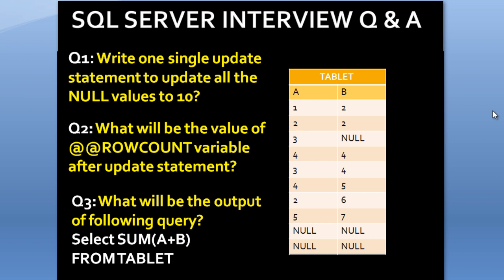The second question is: what will be the value of the @@ROWCOUNT variable after the UPDATE statement? We have a total of five null values, so will @@ROWCOUNT return five or three? Because null values are available only in three rows. The third question is: what would be the output of the query SELECT SUM(A + B) FROM the table? We will see all three in practice.